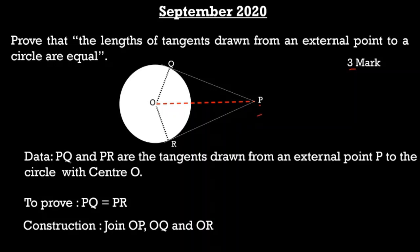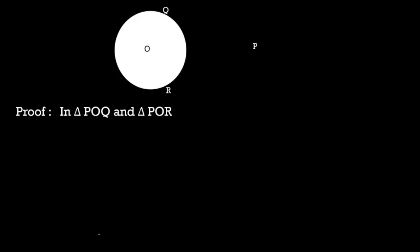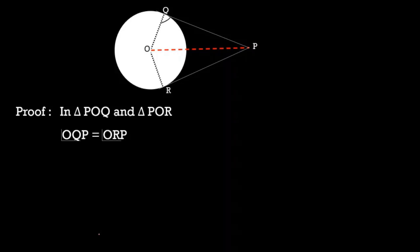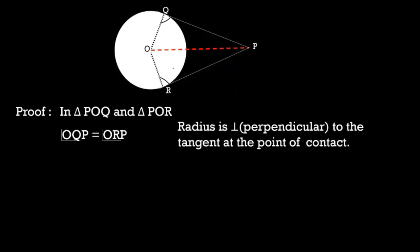For writing data, to prove, and construction, we will get half a mark each. Now we will see how to prove this statement. In triangle POQ and triangle POR, angle OQP is equal to angle ORP. Angle OQP and ORP are right angles — these are the angles between the radii and tangents. According to Theorem 4.1, the radius is perpendicular to the tangent at the point of contact. So angle OQP is equal to angle ORP, which is 90 degrees.